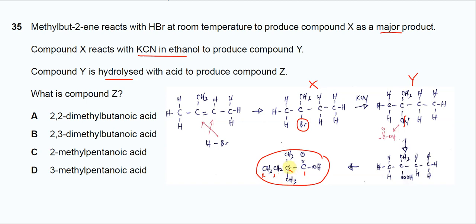The second carbon has two methyl groups, so we call it 2,2-dimethyl. Four carbon carboxylic acid is butanoic acid. So the answer is 2,2-dimethylbutanoic acid, A. That's all, thank you.